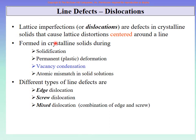Now, because of any of these reasons, if dislocations form, there are three types: edge dislocation, screw dislocation, and mixed dislocation. We will do them one by one.